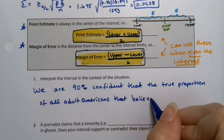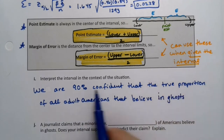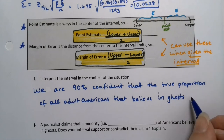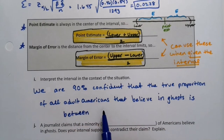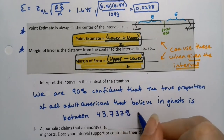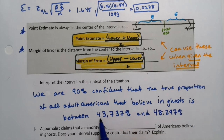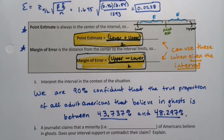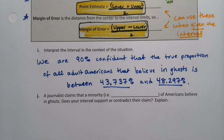There is some percentage right now of all adult Americans that believe in ghosts, and we are 90% confident that that value is between... For the sake of interpretation, I'm actually going to write our interval limits as percentages — that's where percentages are useful. So it's between 43.7% and 48.297%. Those were our lower and upper limits for our interval. That's the one time percentages are very useful — for interpreting these confidence interval limits.